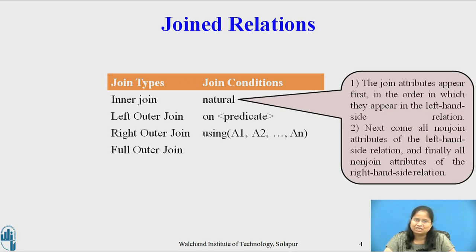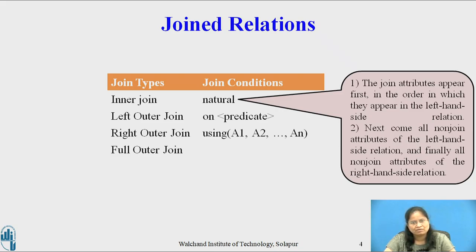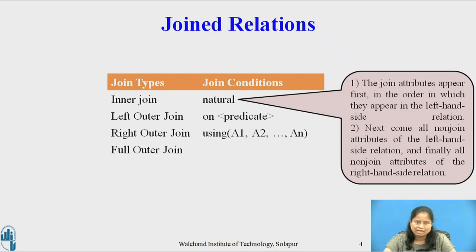The meaning of the join condition natural in terms of which tuples from the two relations match is straightforward. The order of attributes in the result of the natural join is as follows: the join attributes — common to both relations — appear first in the order they appear in the left-hand side relation; next come all non-join attributes of the left-hand side relation, and finally all non-join attributes of the right-hand side relation. The using clause is a form of natural join that only requires values to match on the specified attribute. The on condition allows a general predicate over the relations being joined, and appears at the end of the join expression.